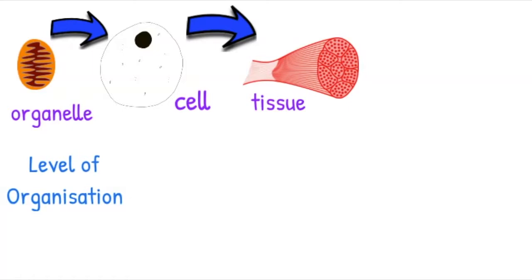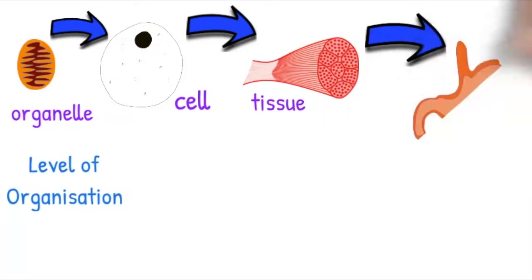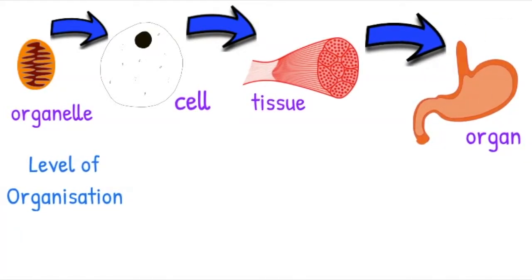A variety of tissues working together to carry out a function is called an organ, such as the stomach. It is made up of secretory tissue, muscle tissue, mucosal tissue, epithelium, and various other tissues to pummel the food, start digestion, and form a liquid chyme.